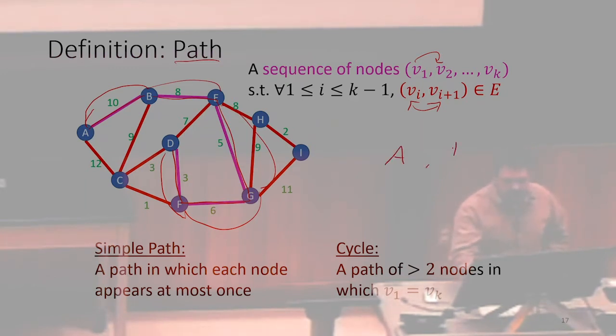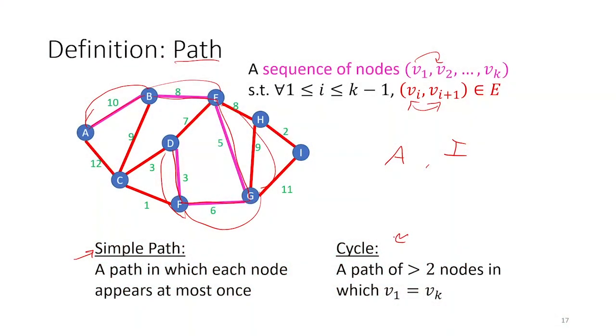So for instance, A, I is not a valid path because there is no edge that goes from A to I. Any such sequence we call a path. We call it a simple path if each node that appears appears at most once. That is we're never visiting the same node twice. If we never visit the same node twice, that's a simple path. If we start and end at the same location, that's called a cycle. So we can have paths that are neither simple nor cycles. For instance, a path that looks something like that would be neither simple nor a cycle because we visited that node twice.